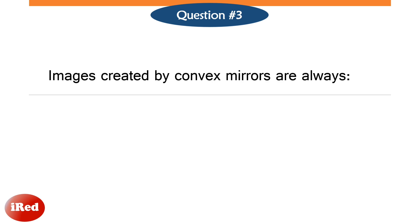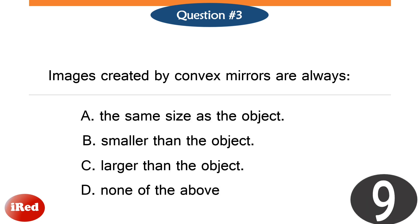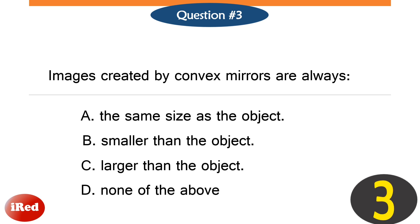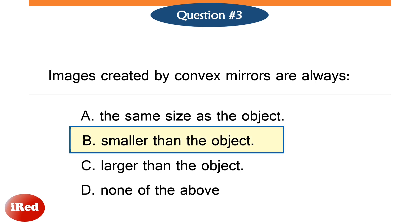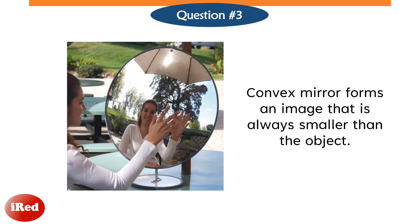Number three: images created by convex mirrors are always — the correct answer is letter B: smaller than the object. As shown in the picture, a convex mirror forms an image that is always smaller than the object.